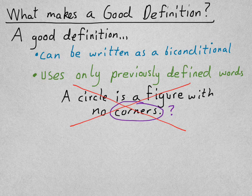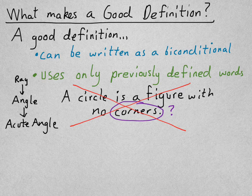When we talk about using previously defined words, like with our acute angle example, I'd have to define what an angle is before I can define what an acute angle is. And, before I can define what an angle is, I'd have to define what a ray is, and so on and so forth. We build definitions off of previously defined words.